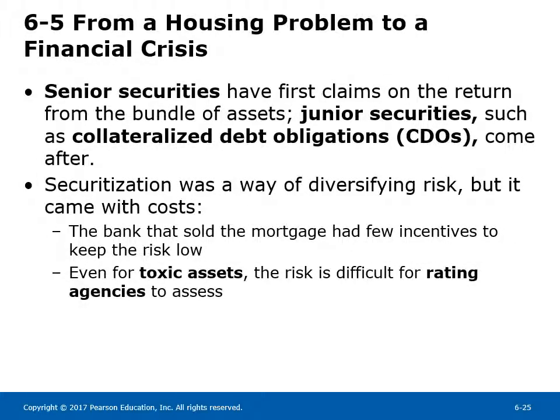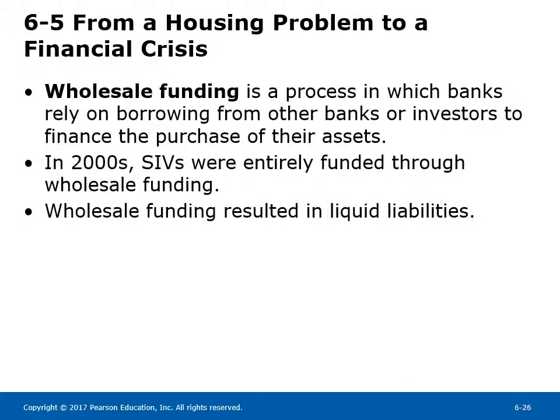Senior securities have first claims on the return from the bundle of assets. Junior securities, such as collateralized debt obligations (CDOs), come after. Securitization was a way of diversifying risk, but it came with costs: the bank that sold the mortgage had few incentives to keep risk low, and even for toxic assets, risk is difficult for rating agencies to assess. Wholesale funding is a process in which banks rely on borrowing from other banks or investors to finance the purchase of their assets. In the 2000s, SIVs were entirely funded through wholesale funding, which resulted in highly liquid liabilities.